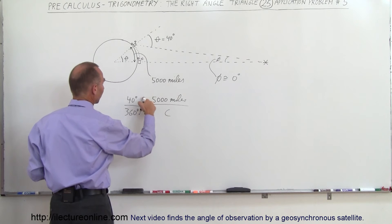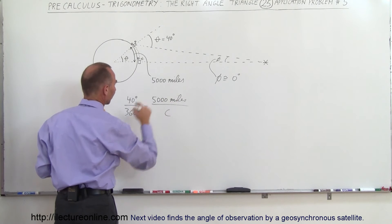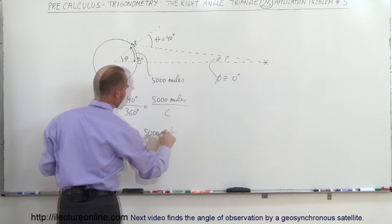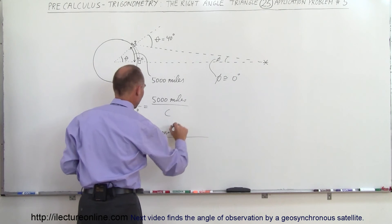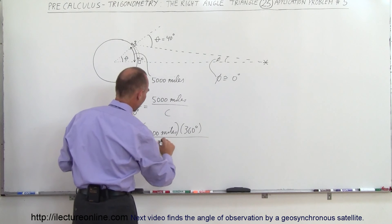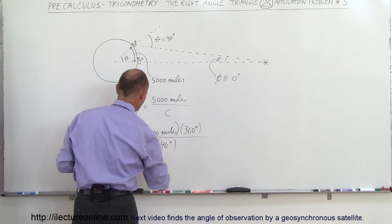If we then solve for the circumference, we can say that if we cross multiply—put the C over there, put the 40 down there, put the 360 down there—we can then say that C is equal to 5,000 miles times 360 degrees and then divided by 40 degrees.